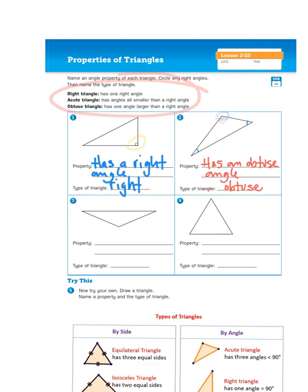And then finally, you are asked to draw your own triangle. So, you would have to take a look at your drawing and then define it. So, you can either draw a triangle and then look at it and think, well, what kind of triangle did I draw?